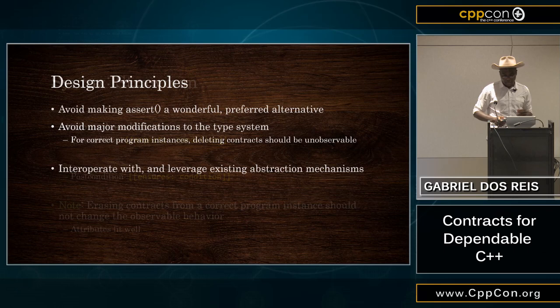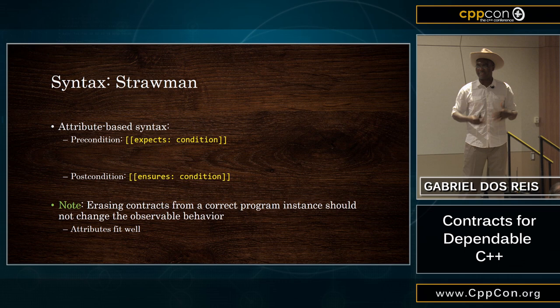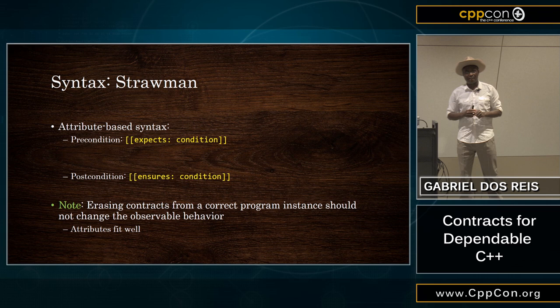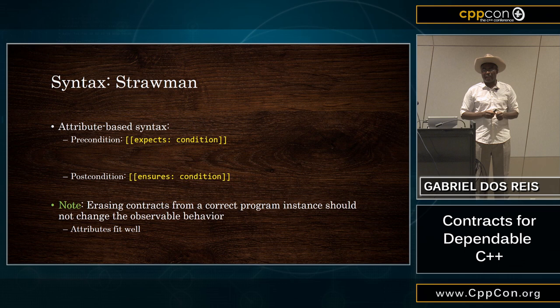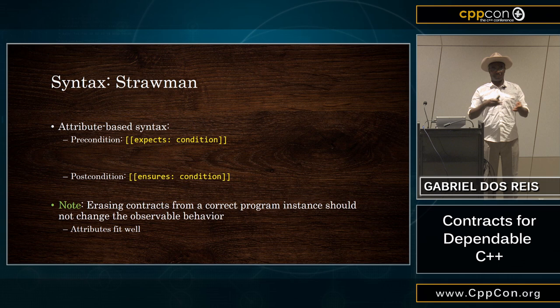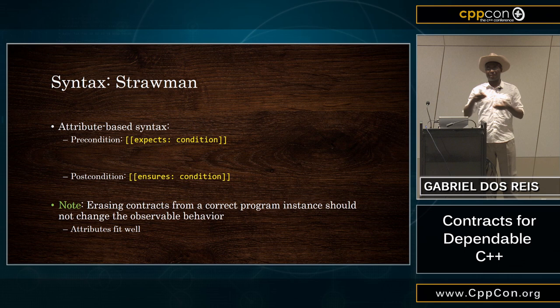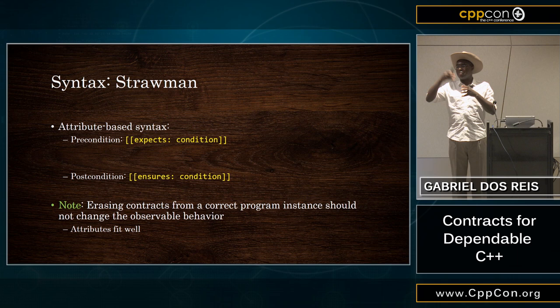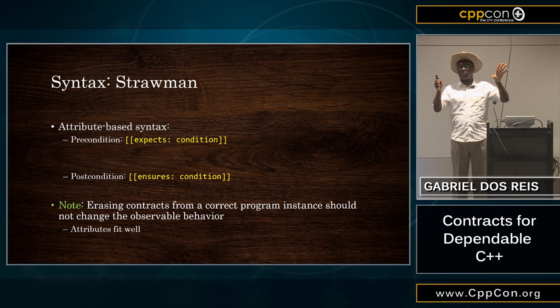So that brings us to: how will we express this? C++11 has this notion of attributes. My proposal is: let's just use attribute notation. The way we get attributes into the standard is to say: if you have an attribute and the compiler doesn't understand it, the compiler can ignore it and you still get a correct program — the same program as if the compiler understood the attribute in the first place. So you have this notion of semantic transparency: if you remove the attribute, if the original program is correct, it should also be correct without the attribute, and both should give the same observable behavior.